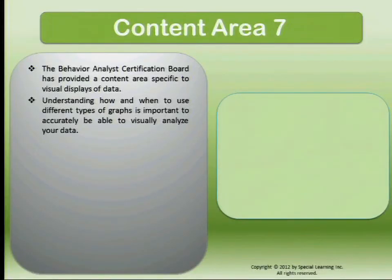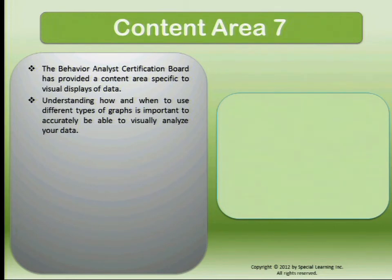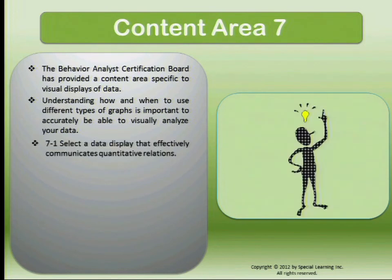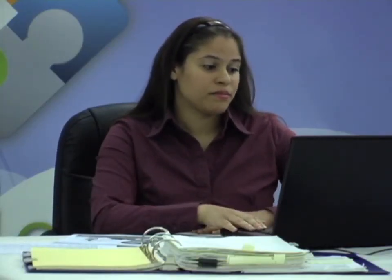As most certified behavior analysts know, visual displays of data are part of content area seven in the third edition task list. The Behavior Analyst Certification Board expects us to be able to visually represent our data and to understand how and when to use different types of graphs. Task 7-1 expects behavior analysts to select a data display that effectively communicates the quantitative relationship, so you can make data-based decisions.